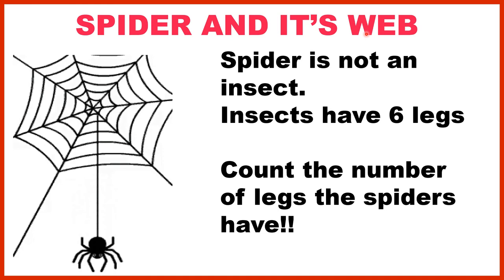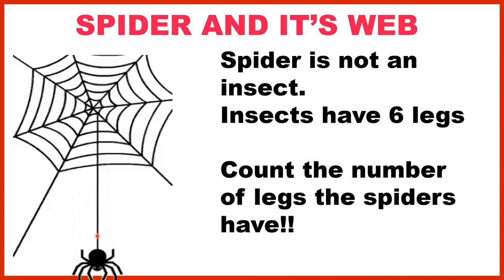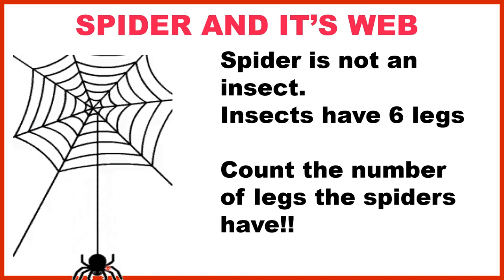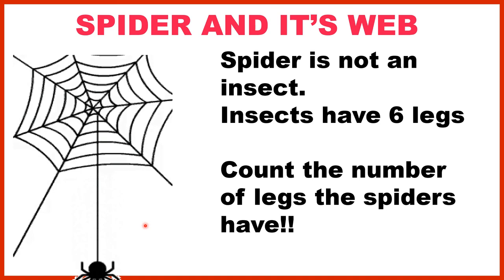Children, is a spider an insect? No, a spider is not an insect. Insects have six legs. Count the spider's legs — yes, the spider has eight legs. Another animal that has eight legs is the octopus. So a spider is an animal, not an insect, because it has eight legs.